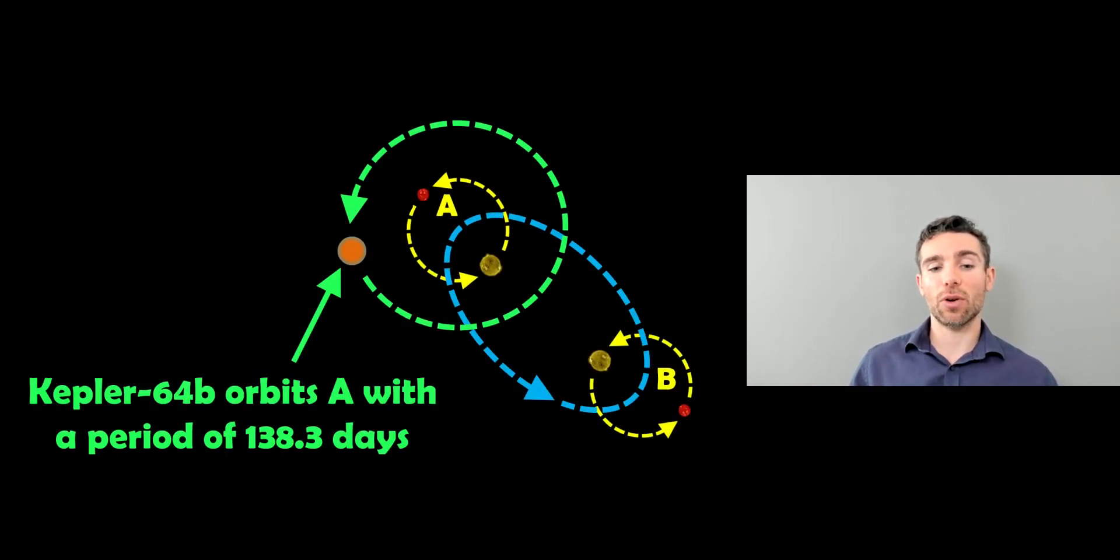Now, Kepler-64b orbits the binary A. This is our eclipsing binary. And it has a period of just over 138 days. So it takes 138 days to go around the outside of that binary star system.